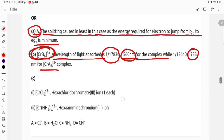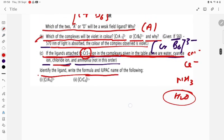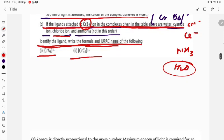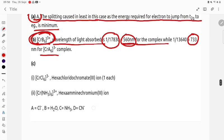Identify the ligand, write the formula and IUPAC name of [CrA6], [CrC6]³⁻. So chloride is there, NH3 is there. Hexachlorido chromate(III) ion because negative charge is there.